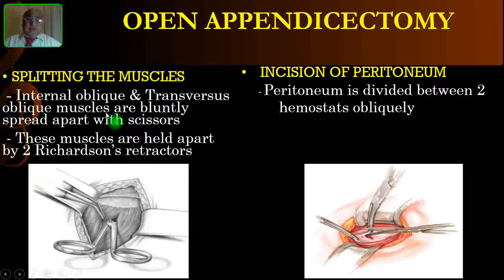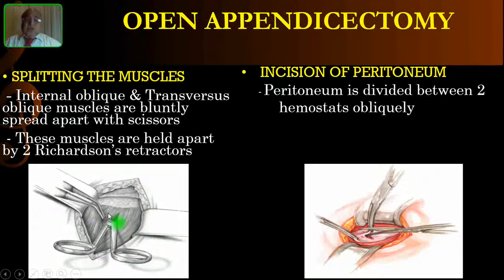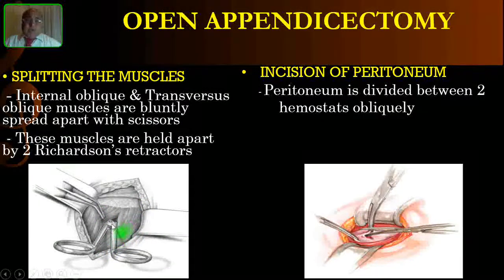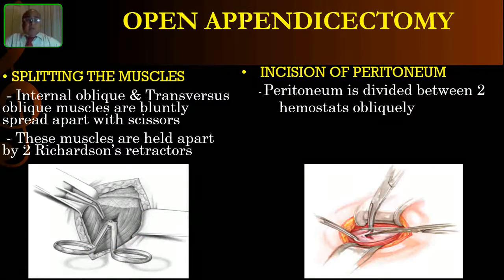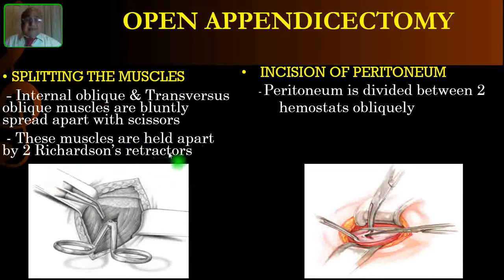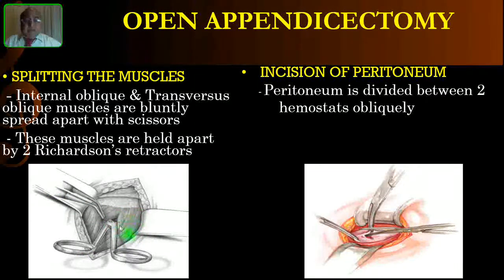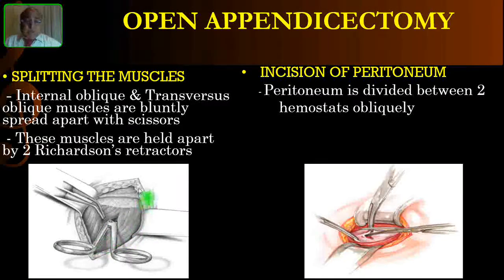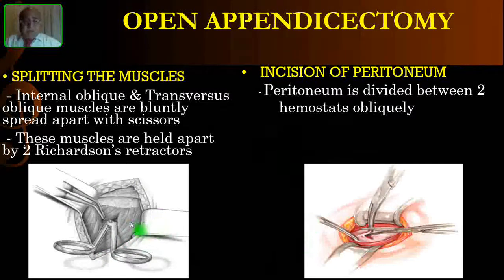Beneath the external oblique are the internal oblique and the transversus abdominis muscles. You should not cut these muscles — you have to split them. After making a small hole in the muscle, you can use scissors or your fingers to bluntly dissect them. You can put two fingers inside and bluntly dissect, or use two Richardson retractors. You are only splitting the muscle across its fibers.